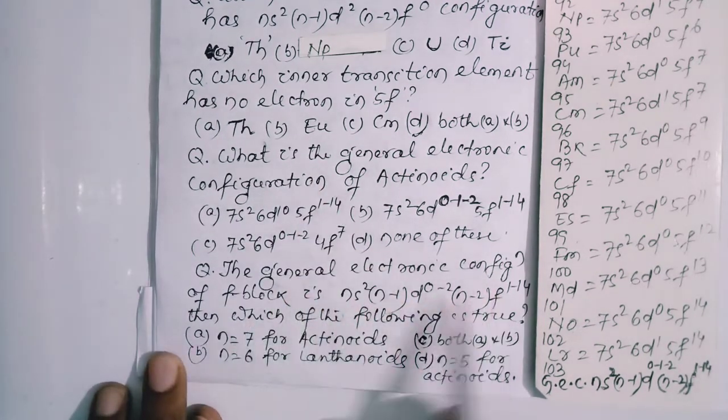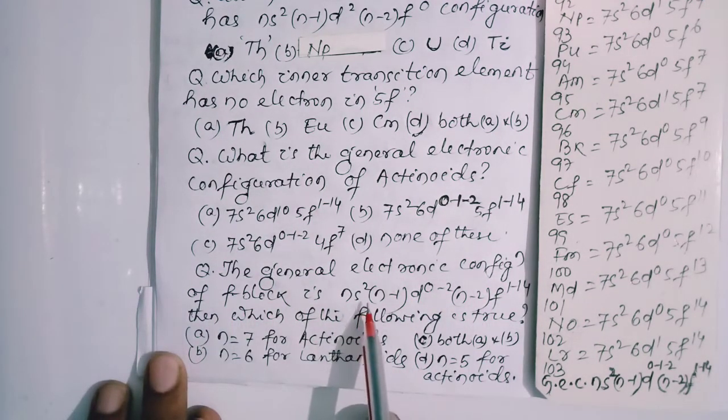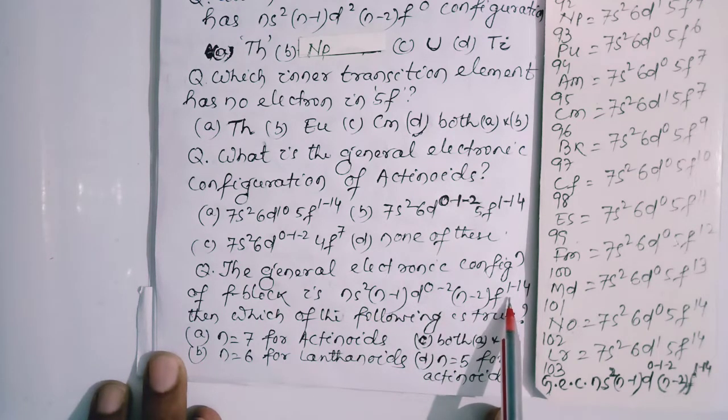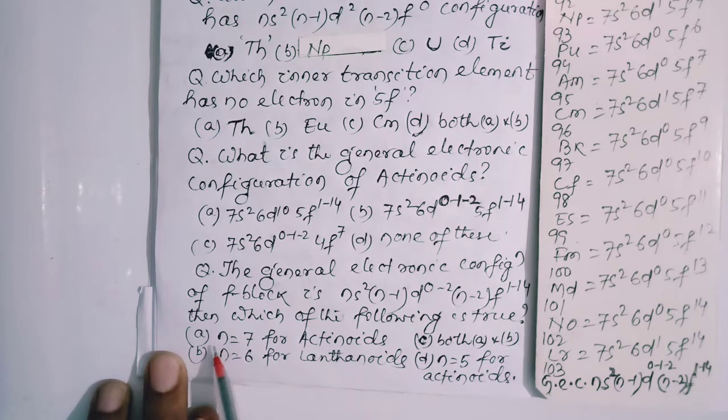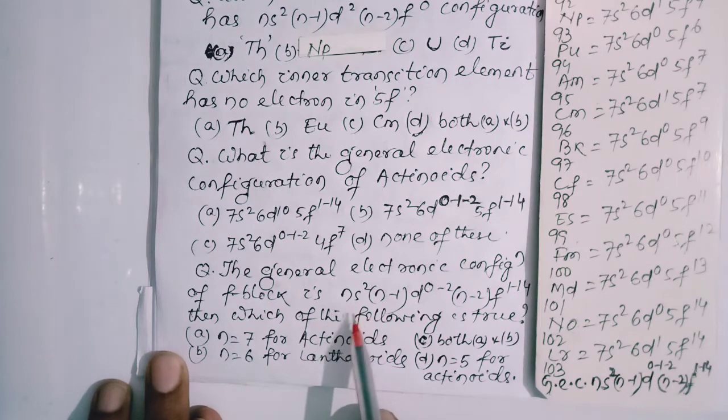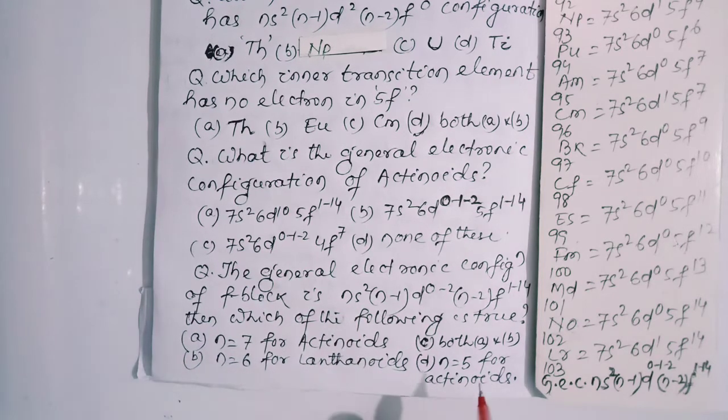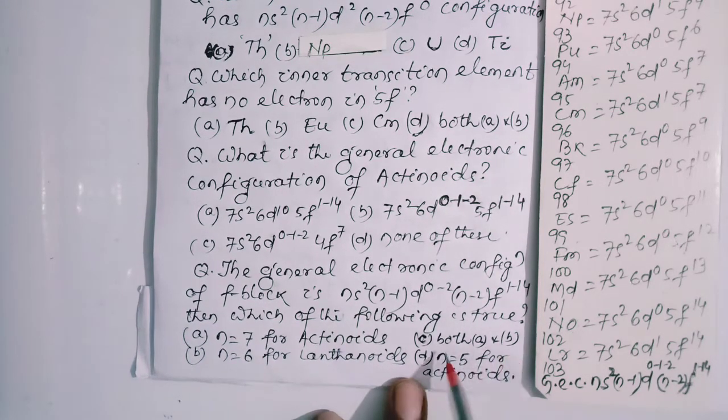The general electronic configuration of F block is ns² (n-1)d⁰⁻² (n-2)f¹⁻¹⁴. Then, which of the following is true? A: N is equal to 7 for actinoids. Yes, it is correct. Because for actinoids, N is equal to 7. And for lanthanoids, N is equal to 6. Yes, it is correct. So both A and B are correct. So option D is the most appropriate answer.